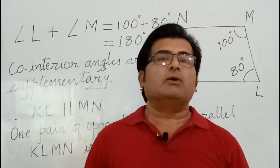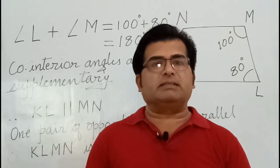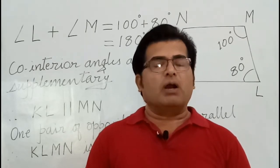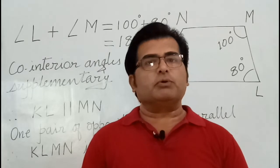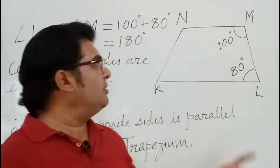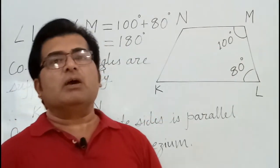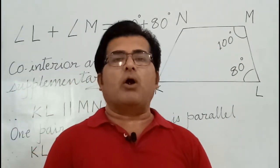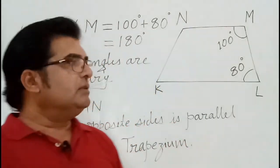If it is a trapezium, then which are the parallel sides? Because a quadrilateral whose one pair of opposite sides is parallel is called a trapezium. So with the help of the given two angles, we have to determine whether it is a trapezium or not.